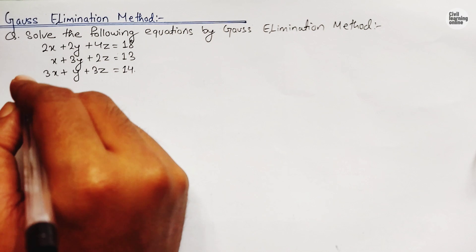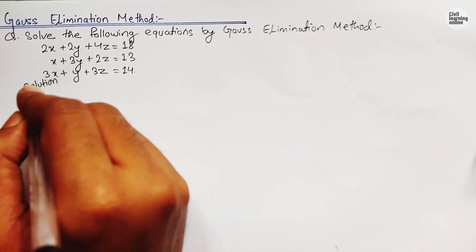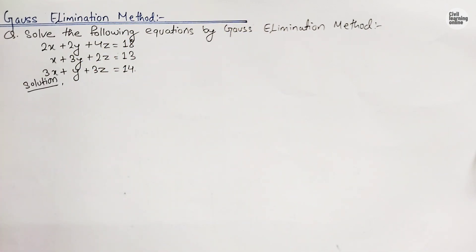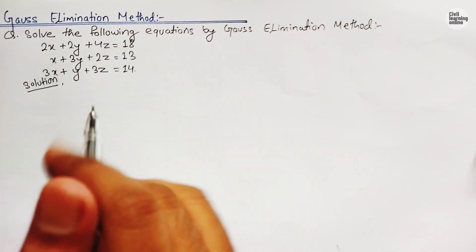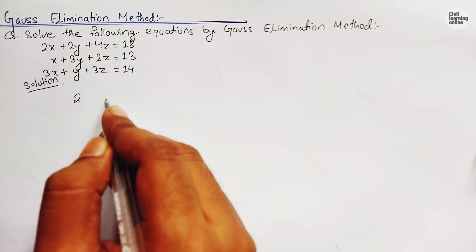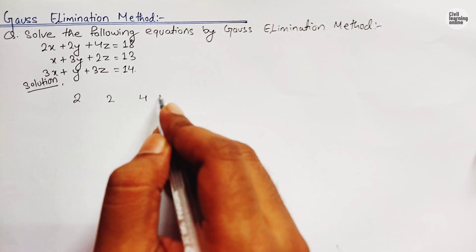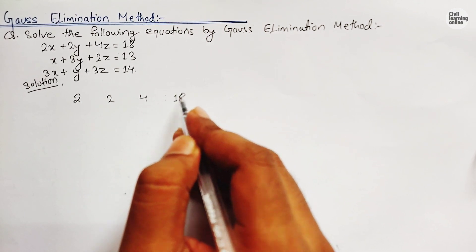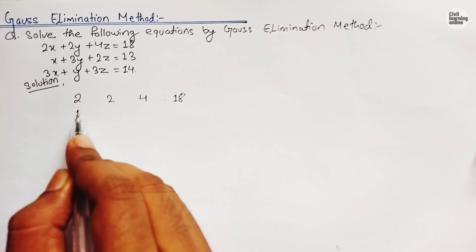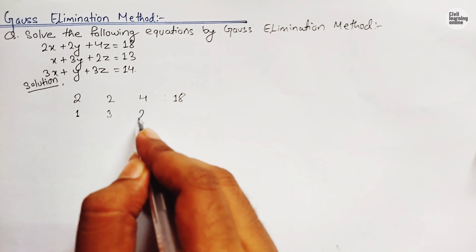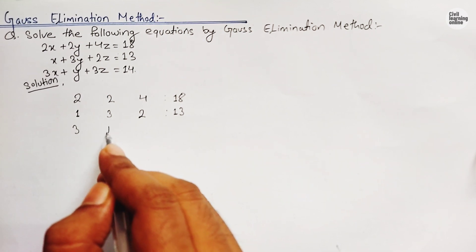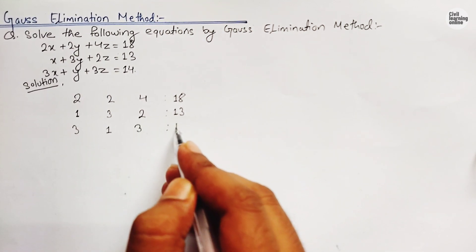We will rewrite the given system of equations in the form of an augmented matrix by copying the coefficients. The first equation gives us 2, 2, 4 | 18. The second equation gives 1, 3, 2 | 13. Similarly, the third row is 3, 1, 3 | 14.